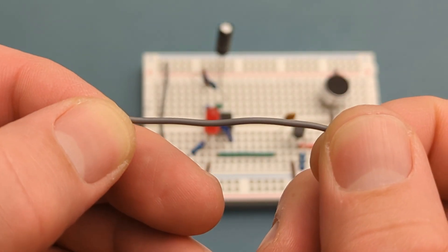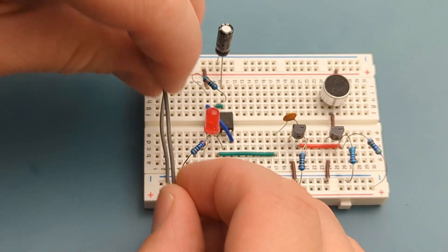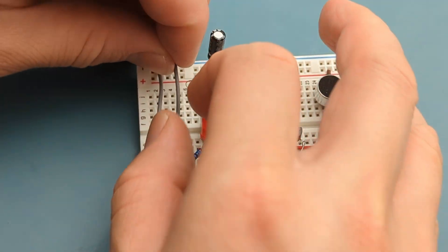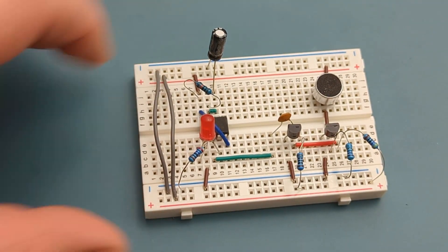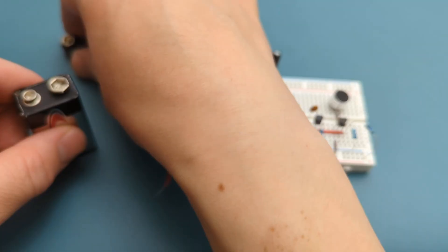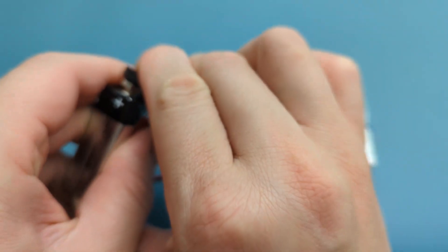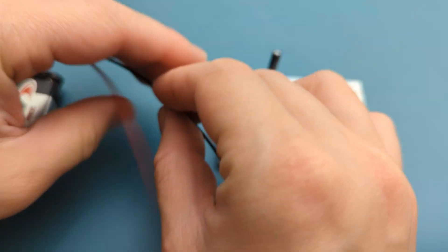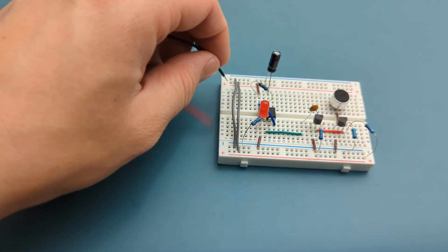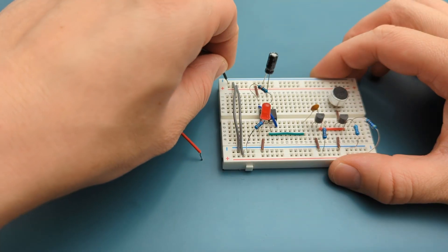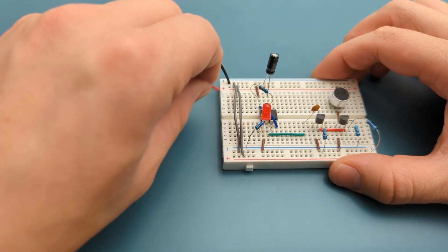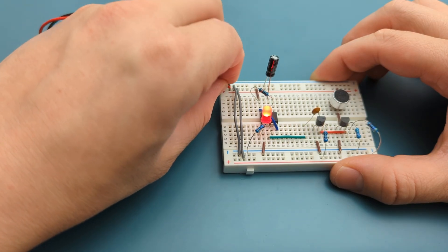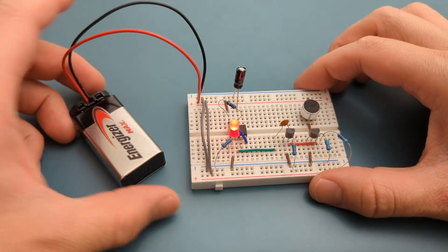Connect the buckle connector to the 9-volt battery. It's time to connect the power supply. Insert the negative lead to the negative rail. Insert the positive lead to the positive rail. We have successfully completed the circuit.